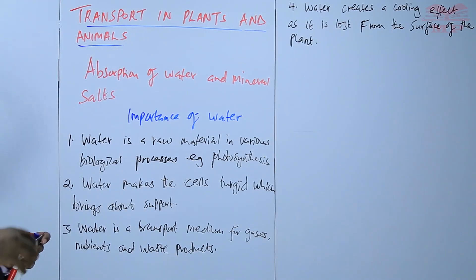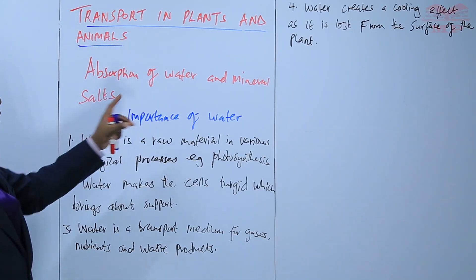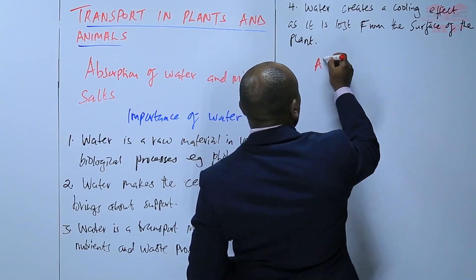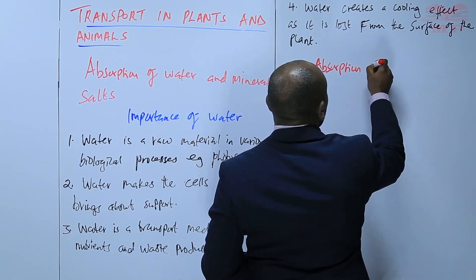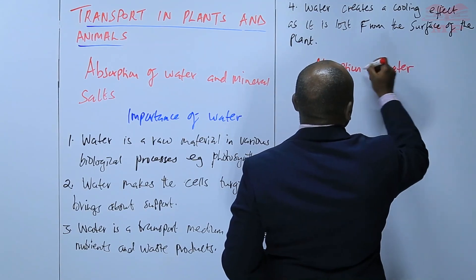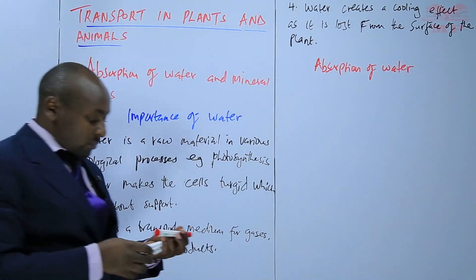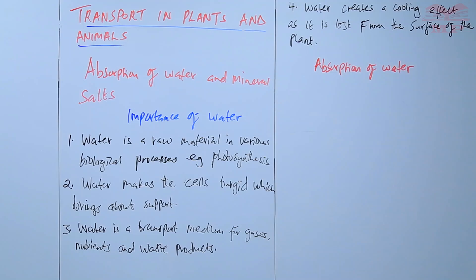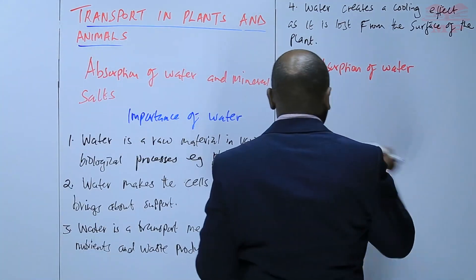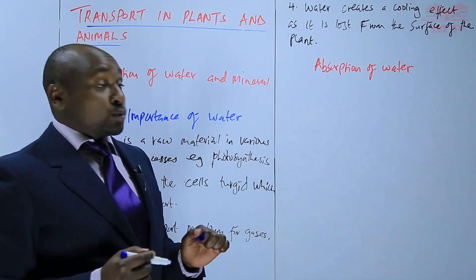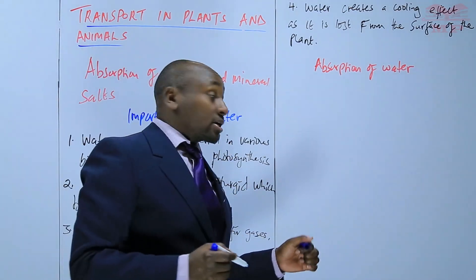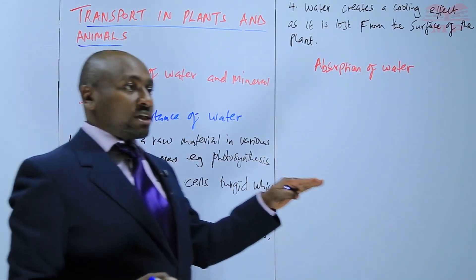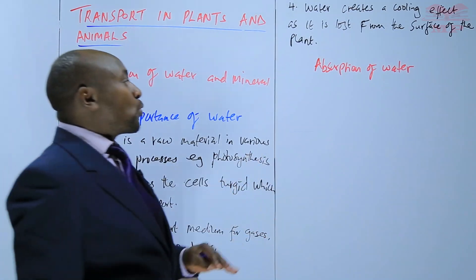We are interested in how water is absorbed and how mineral salts are absorbed. First of all, we'll look at the absorption of water, and we'll explain this by use of a diagram. Water is absorbed by the root hair cells — we learned that when we talked about the structure of the root. It is important to show how water gets into the root hair cell and how it is transported within the plant.